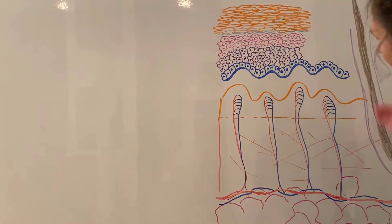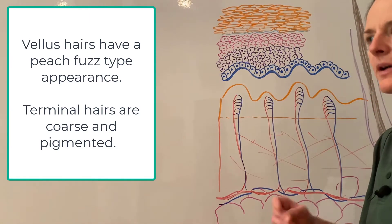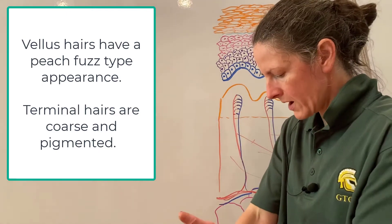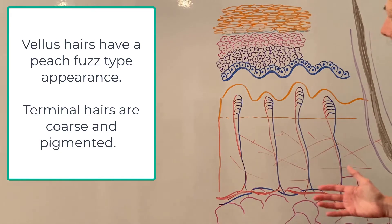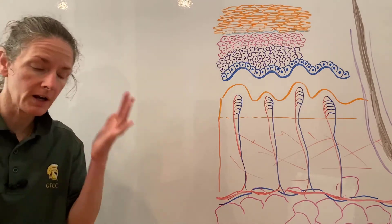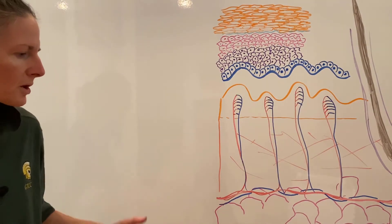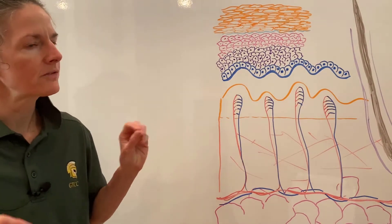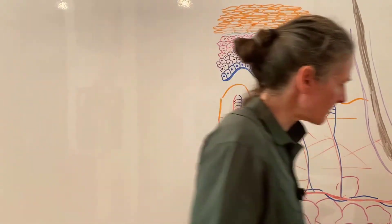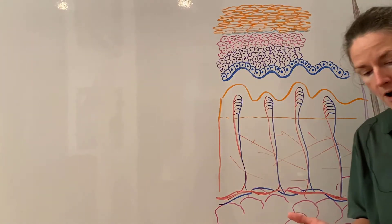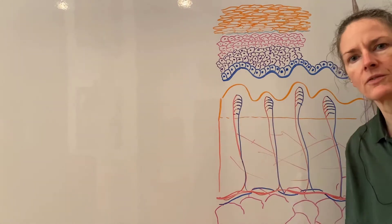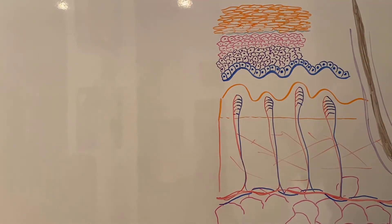There are different types of hair. Vellus hairs are the thin peach-fuzz type found on the arms and face. Terminal hairs are the dark, thick, pigmented hairs found on the head, eyebrows, and armpits. Hairless skin is called glabrous skin, found on the external genitalia, lips, soles of the feet, and palms of the hands.